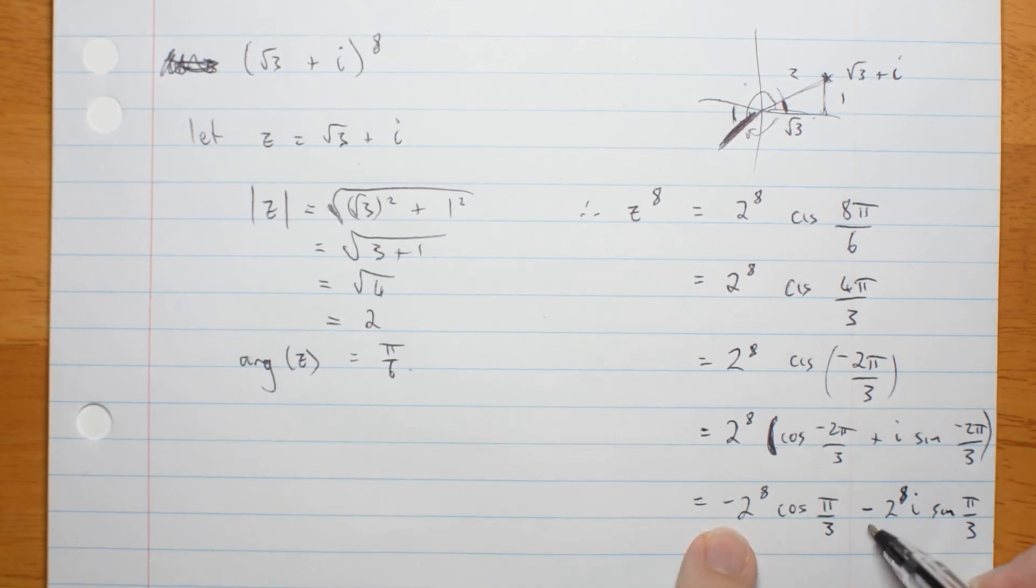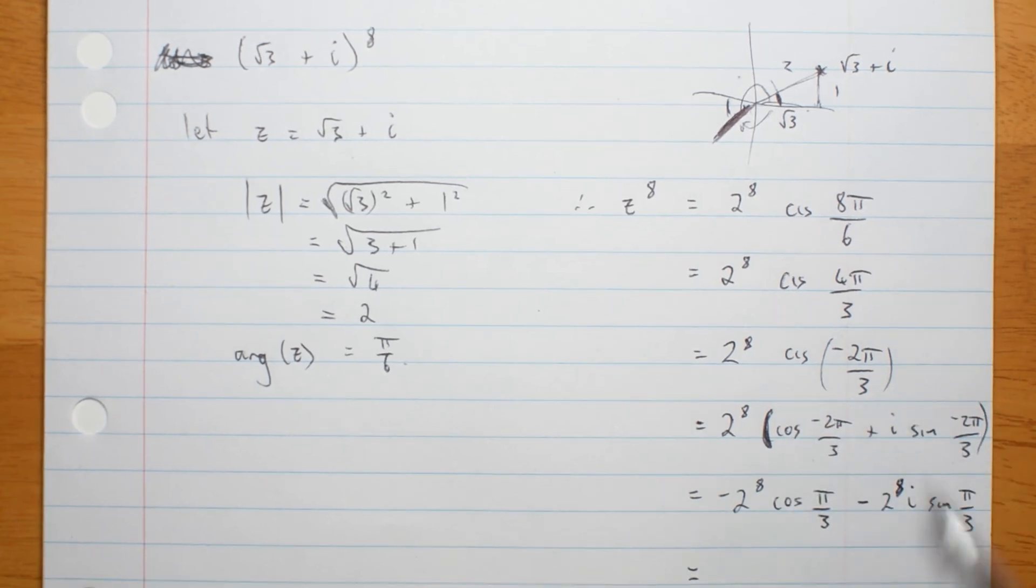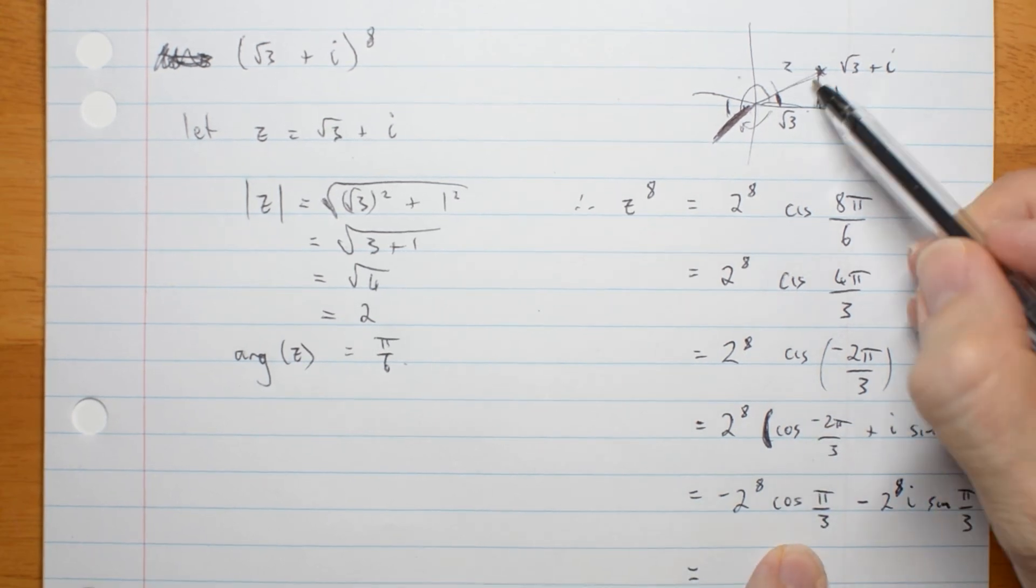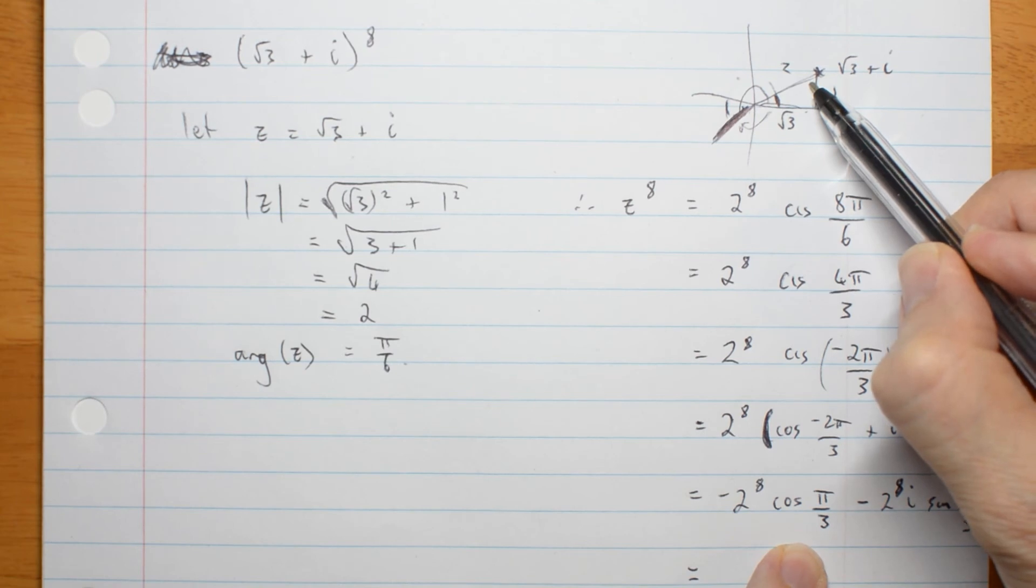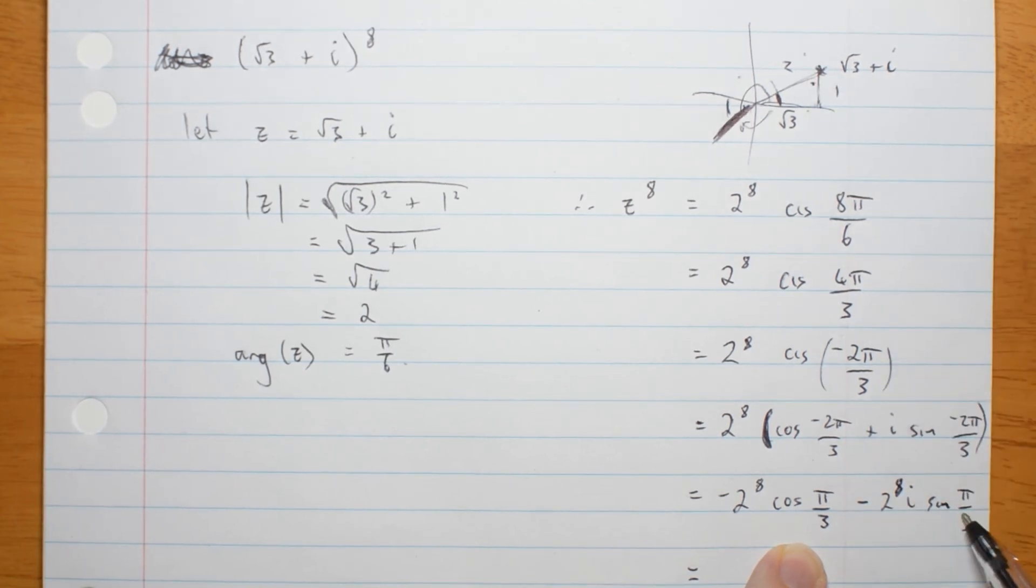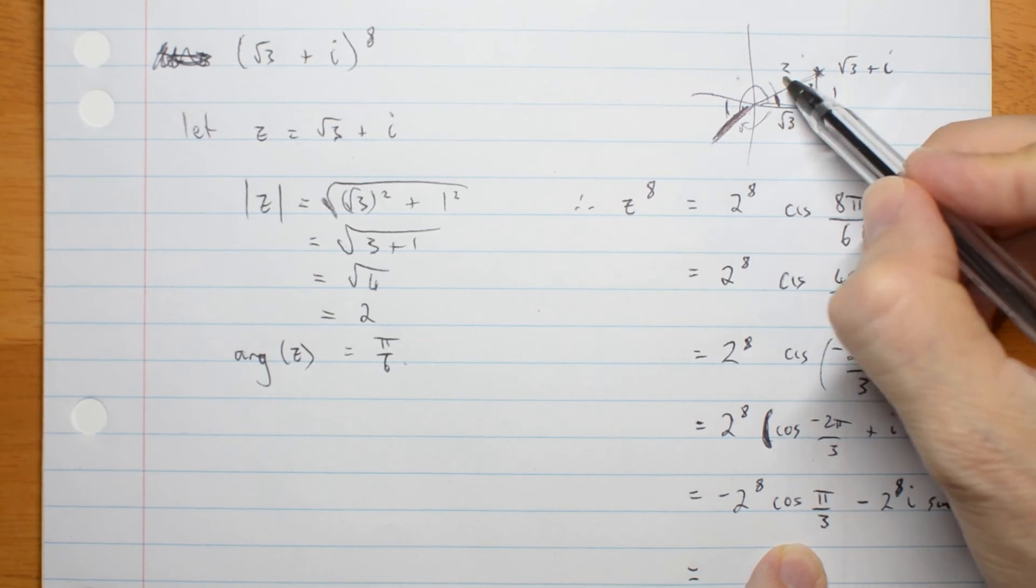Then cos pi on 3 is cos of this angle, cos is a half, and sine pi on 3 is root 3 on 2.